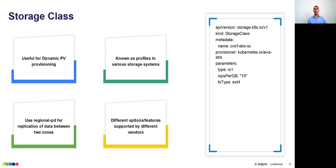Storage class is like a profile or tier. Kubernetes supports different kinds of storage, and applications also require different kinds — some need very high-performing storage while others don't. We can create categories of storage called storage classes: one for high-performing storage, one for low-performing storage, and so on. Storage class is useful for dynamic PV provisioning.